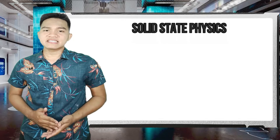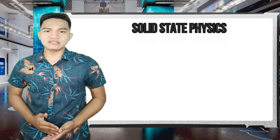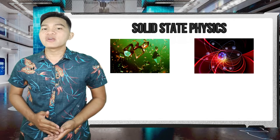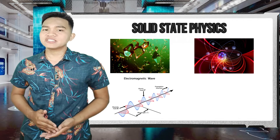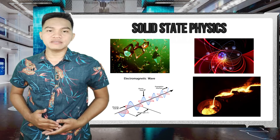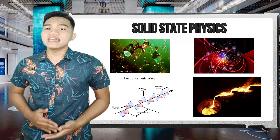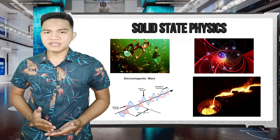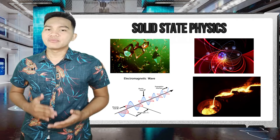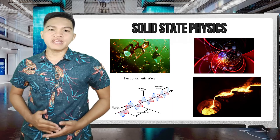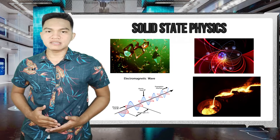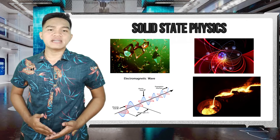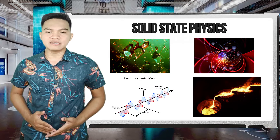In other words, solid-state physics is the study of solids through various methods like crystallography, quantum physics, electromagnetism, and metallurgy. It helps investigate how the large-scale properties of solid materials result from their atomic-scale properties. Thus, physics forms a theoretical basis of material science.